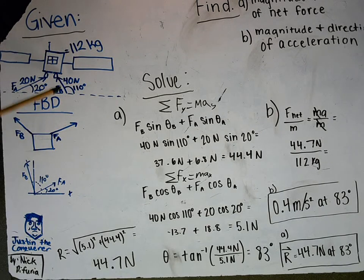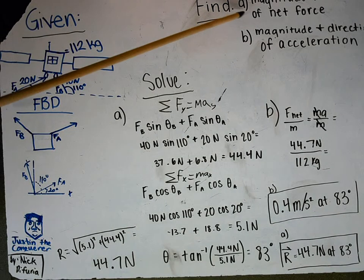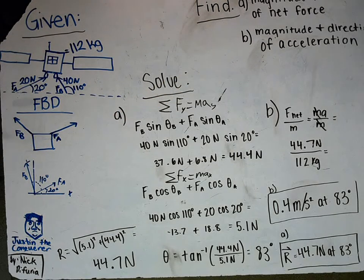These thrusters are applying these two forces on the satellite. That's what's given, and we want to know the magnitude and direction of the net force and the acceleration. So we're going to draw the free body diagram.